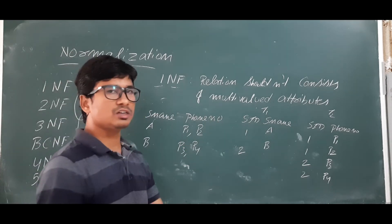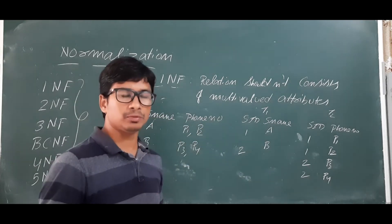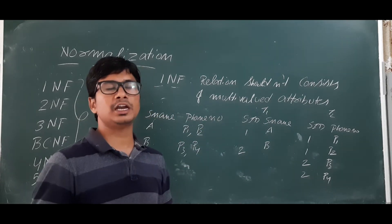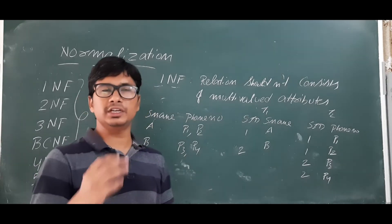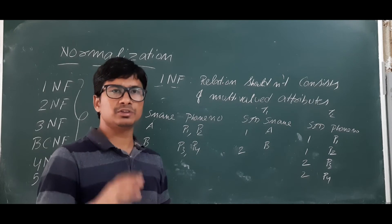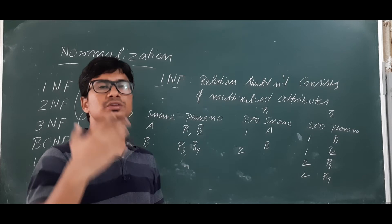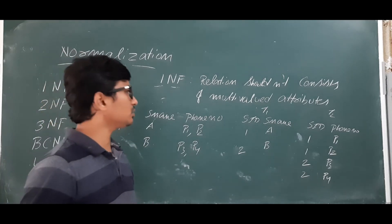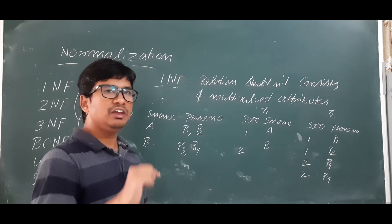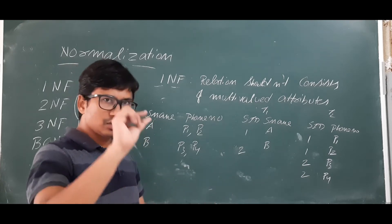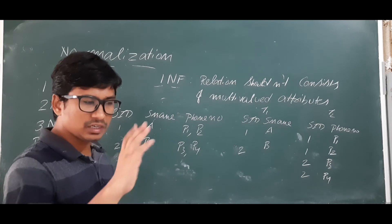Now coming to the First Normal Form: 1NF says that the relation should not consist of multi-valued attributes. A relation can consist of various types of attributes — simple attributes, composite attributes, single-valued attributes, multi-valued attributes, stored attributes, and derived attributes. I have discussed all these in earlier videos, so please go through those if you haven't.